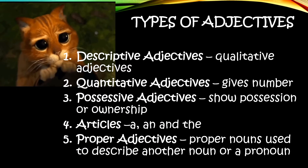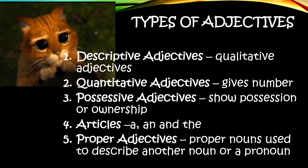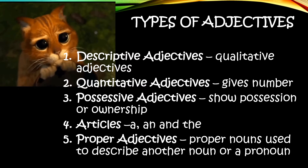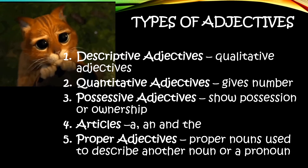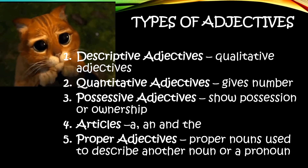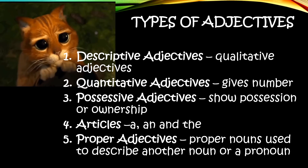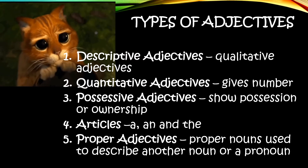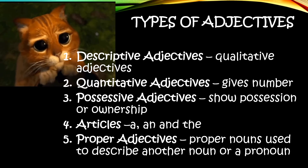There are several types of adjectives, some of which are: 1. Descriptive adjectives — these adjectives can tell us the size, shape, color, and other characteristics of a noun or pronoun. 2. Quantitative adjectives — this can give us the number of nouns.